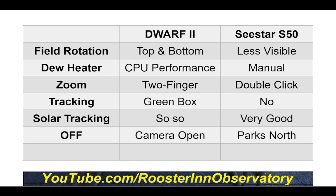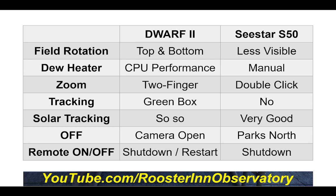When you turn it off, the Dwarf 2 camera stays open and I've often found myself putting fingerprints on the lens. The Sea Star, when turned off, shuts down completely and parks facing north with the lens hidden. The Dwarf 2 has remote on/off — you can shut it down or restart it — while the Sea Star has only a shutdown. I've used the restart feature on the Dwarf many times; when it misbehaves I just restart it. With the Sea Star, I have to physically go outside to turn it back on.